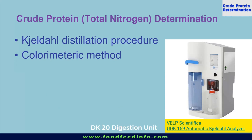There are two techniques which can be used for the determination of total nitrogen content of a feedstuff. One is known as the Kjeldahl digestion and distillation procedure — Kjeldahl was a scientist and the technique is named after him. The second one is a colorimetric method. We are not using the colorimetric method; we will use the Kjeldahl process for the determination of nitrogen content.